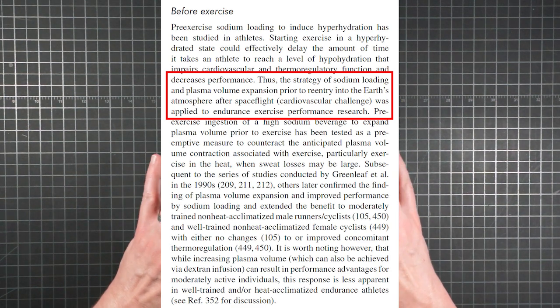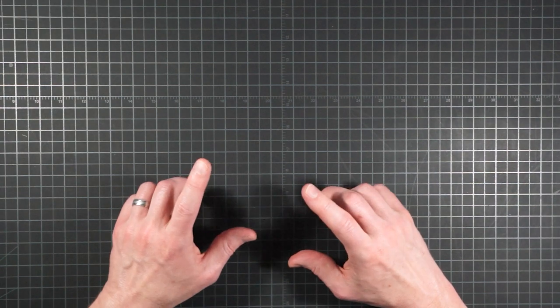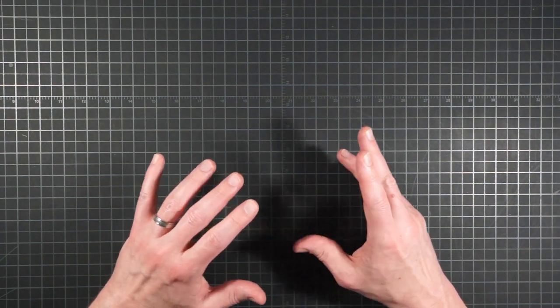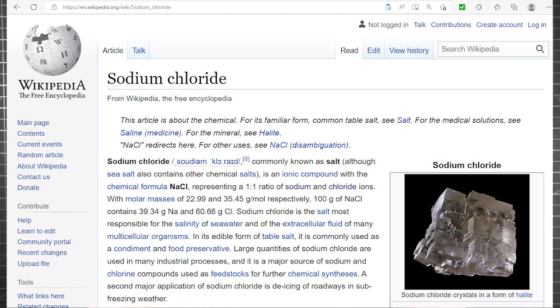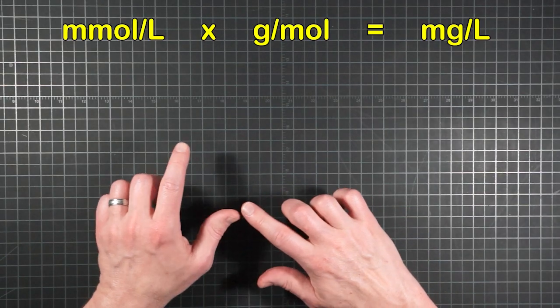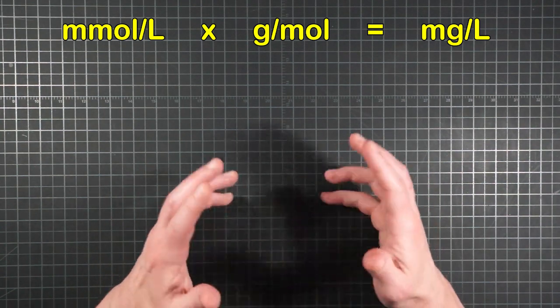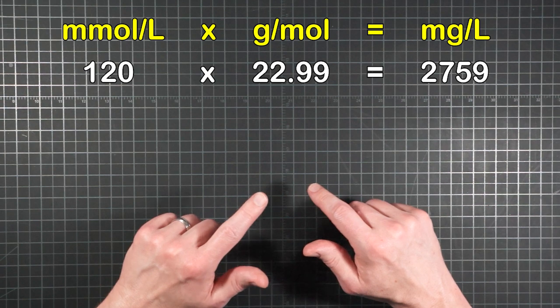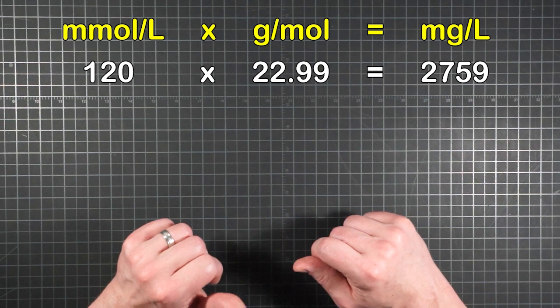To figure out how many milligrams of sodium are in a liter of water with 120 millimoles, you need the molar mass of a sodium ion, which is 22.99 grams per mole. So just multiply the millimoles per liter by the grams per mole to get the milligrams per liter. So 120 millimoles per liter sodium solution is one that contains 2759 milligrams of sodium.